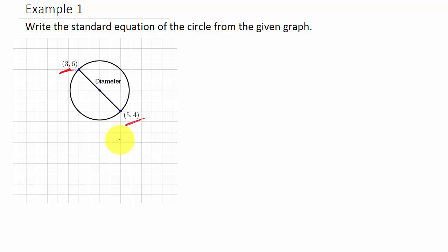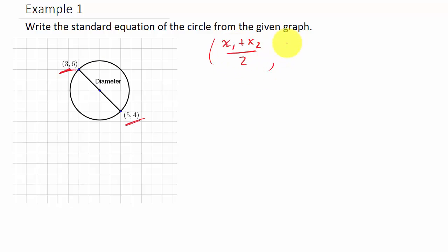If we have the diameter, we know the radius is half the diameter, so we can find the midpoint of this line. The points are (3, 6) and (5, 4). The midpoint formula gives coordinates: x = (x₁ + x₂) / 2 for the x-coordinate, and y = (y₁ + y₂) / 2 for the y-coordinate.